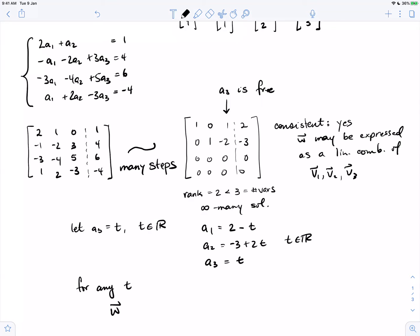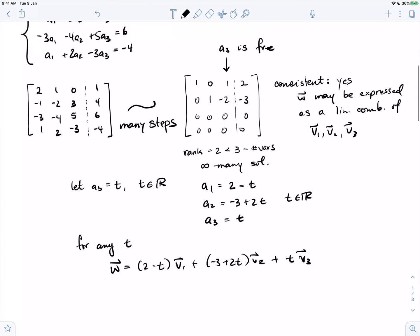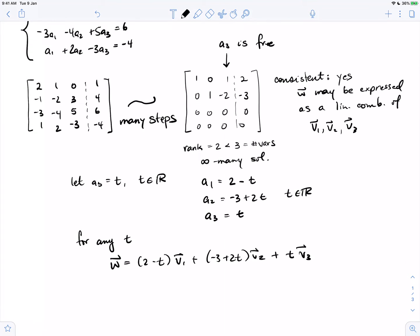For any t, we can write w as 2 minus t times v1 plus minus 3 plus 2t times v2 plus t times v3. So there's infinitely many ways to express w as a linear combination of these three vectors. In particular, if we let t equal 1, then w equals 1v1 minus v2 plus v3.